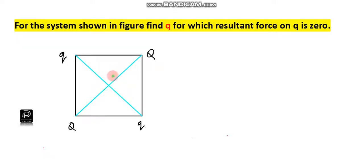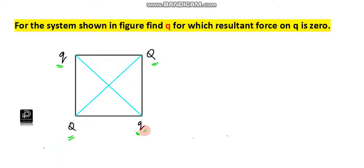Hello students. Let us solve one more problem based on Coulomb's law. Given that there are four charges placed at the corners of a square — two similar charges capital Q and two more charges small q — you need to find the value of Q so that the net force on the small q charge is zero.